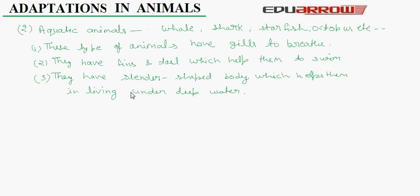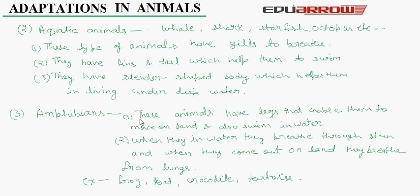Now, amphibians. Amphibians are those animals which have the adaptations to live both on the land and in the water. They get their food from water and come on land to lay eggs. Adaptations in these animals are: these animals have legs that enable them to move on land and also swim in water.